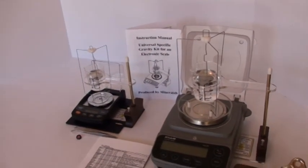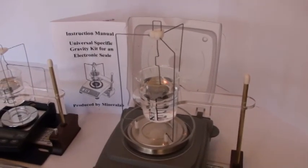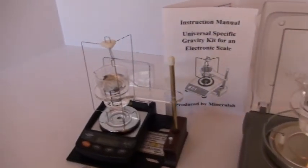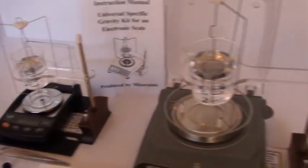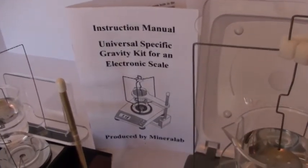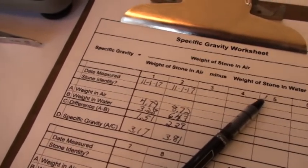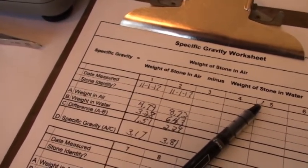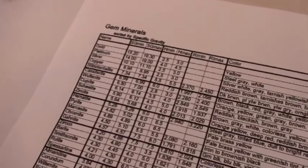You can see that our kit is very complete. We include a weighing pan assembly that sits right on top of the weighing platform of the scale, along with a beaker holder that slides in from the side. And then we have an illustrated instruction manual, a specific gravity worksheet for recording your measurements and doing the simple calculation for SG, and a table of gems and minerals sorted by specific gravity. We throw in our tweezers.